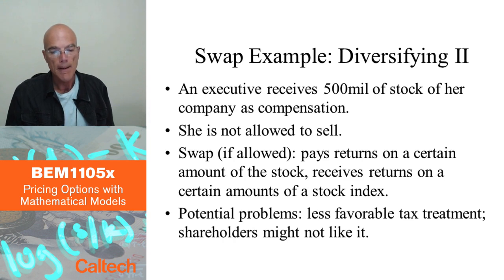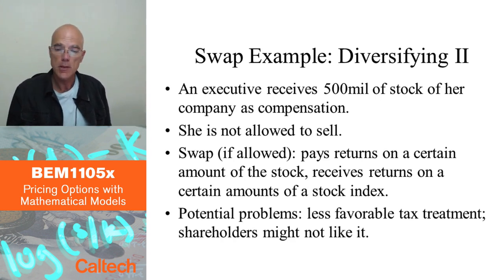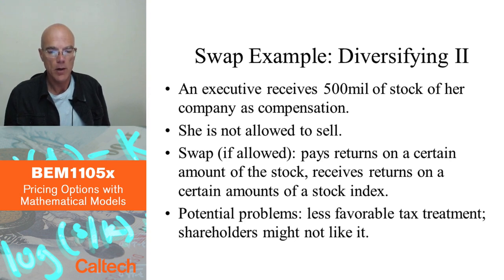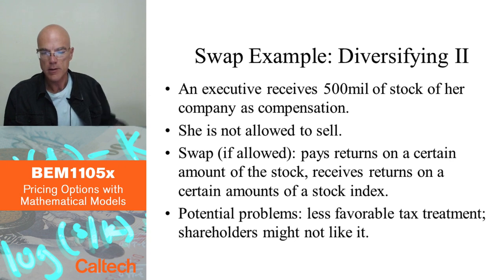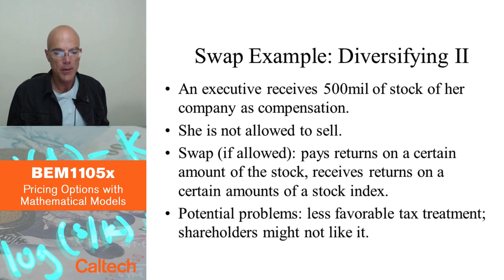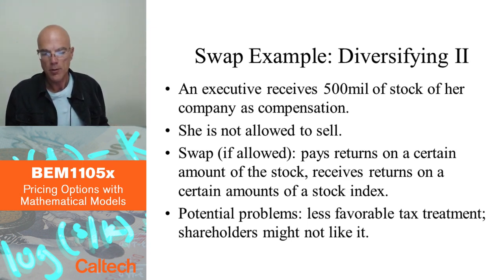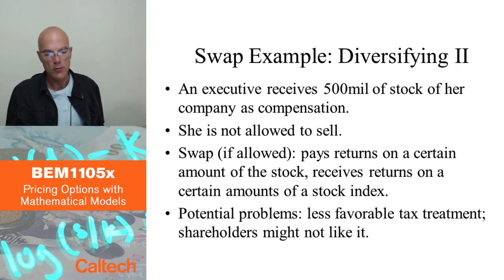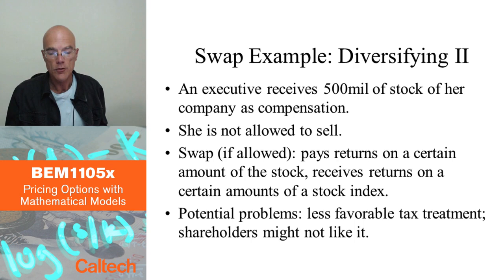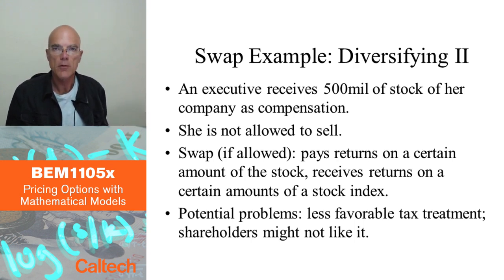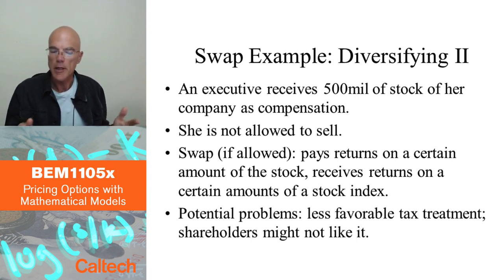A final example involves executive compensation. Executives often receive stock of their own company as part of their compensation and are usually not allowed to sell it, at least not for a while. This means a big, undiversified chunk of their portfolio is tied to their own company's stock. If allowed, an executive could enter a swap exchanging the returns on that company stock for returns on a diversified index like the S&P 500. This may not be possible in most cases today — companies likely won't allow it — but if it were permitted, it would be a way to diversify the portfolio.